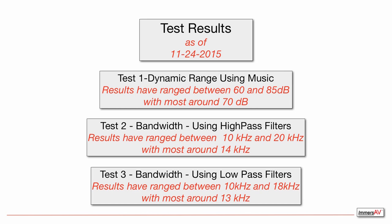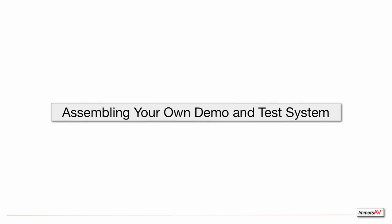Here are test results as of November 24th, 2015. All results have been self-reported. For Test 1 — dynamic range using music — results ranged between about 60 and 85 dB, with most clustered around 70 dB. For the bandwidth test using the high-pass filter, results ranged between approximately 10 kilohertz and 20 kilohertz, with most around approximately 14 kilohertz. For the bandwidth test using low-pass filters, results ranged between 10 kHz and about 18 kilohertz, with most around 13 kilohertz.